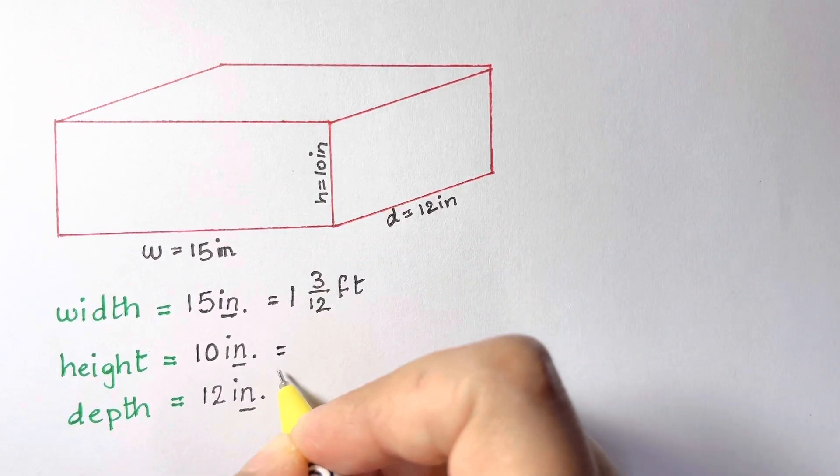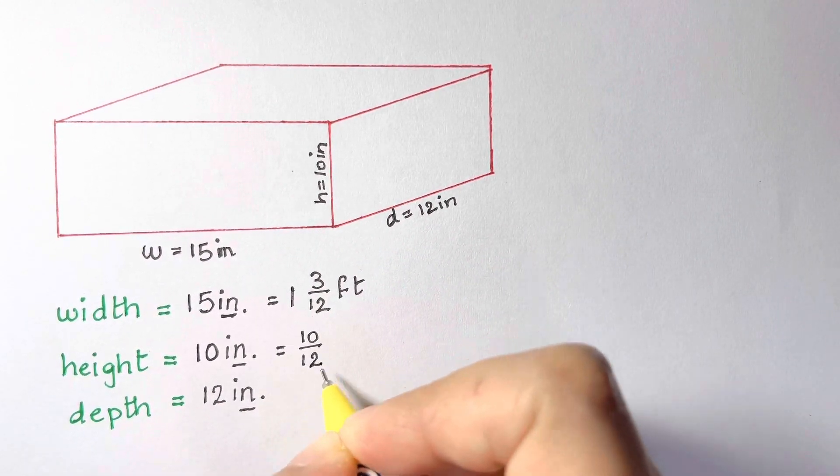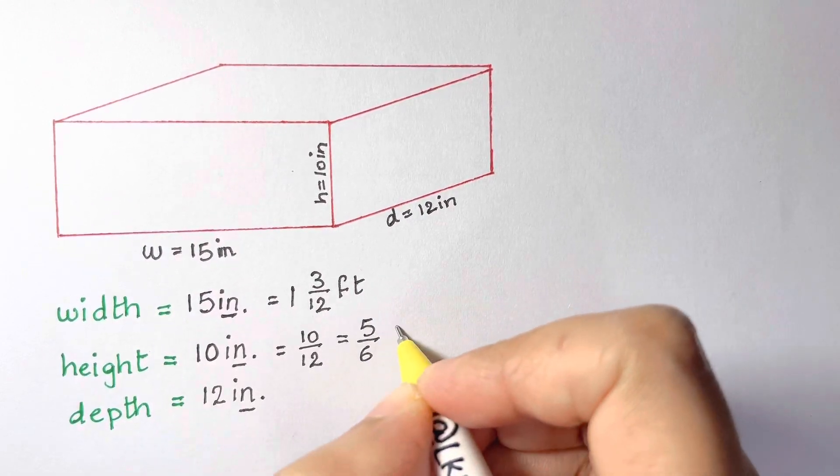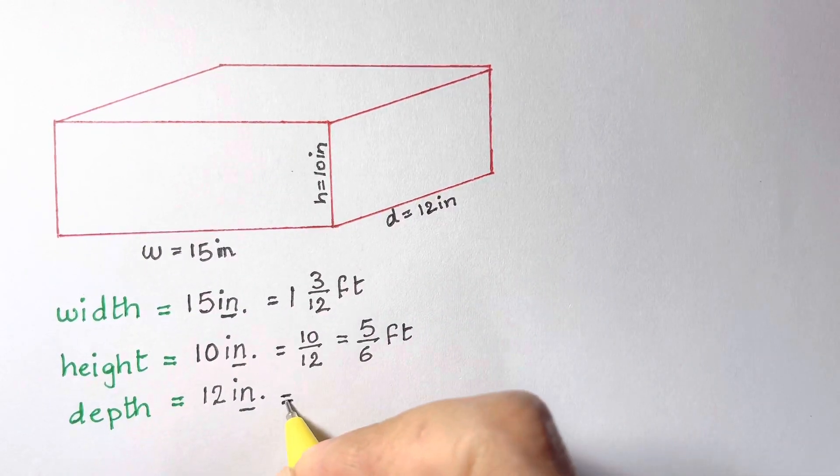10 inches is 10 over 12 of a foot. We can simplify that to five sixths of a foot, and 12 inches is exactly one foot.